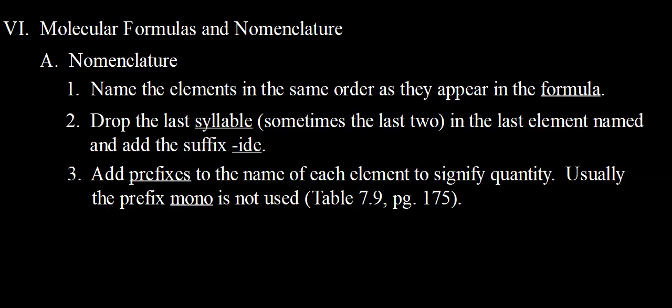Remember that a molecular compound is made up of two non-metal atoms. So if we see that the first thing in the formula is a non-metal and the second thing is a non-metal, that's likely to be a molecular compound. We name the elements in the same order as they appear in the formula. We drop the last syllable — and sometimes the last two, like in the case of oxygen — in the last element named, and then we add the suffix "-ide." So all molecular compounds end in "-ide."